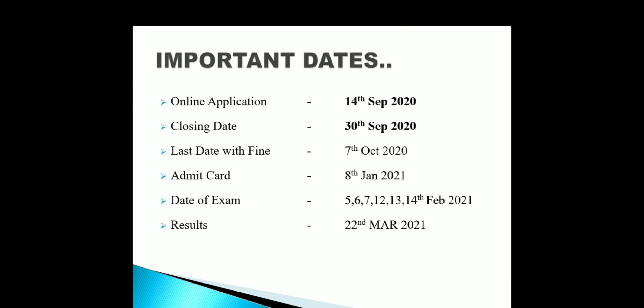What are the important dates for GATE 2021? The online application opens on 14th September. The last date to apply is 30th September, and the last date with late fee is 7th October. Admit cards will be available from 8th January next year. The exam dates are the 1st and 2nd weeks of February — specifically 5th February and 12th February, which are Fridays.